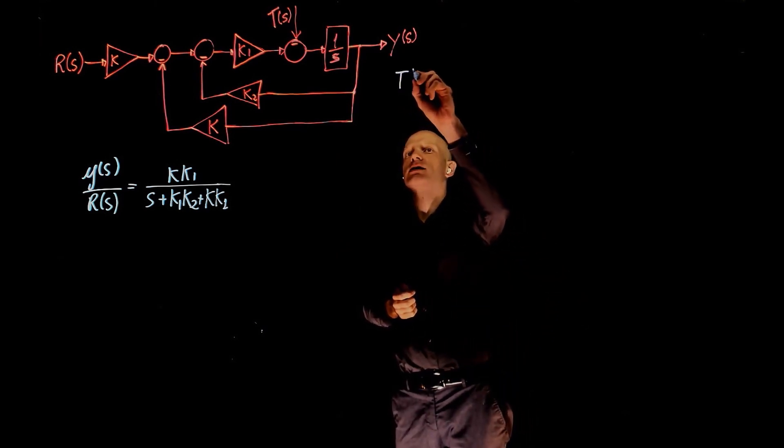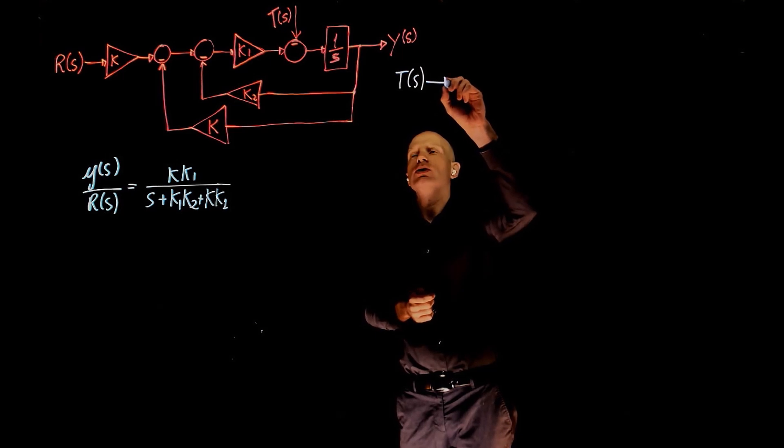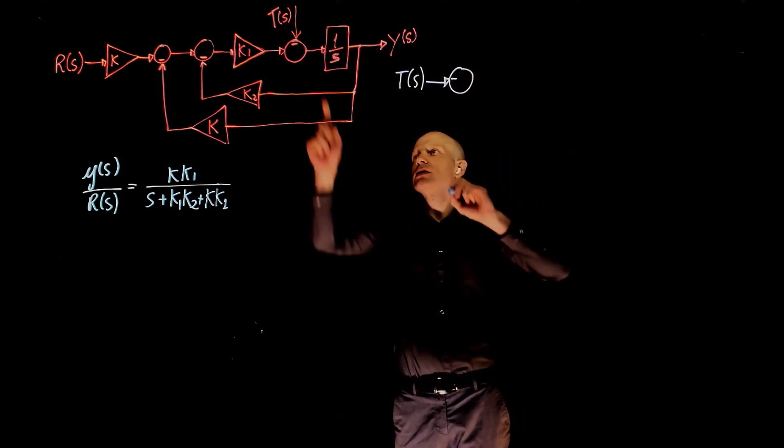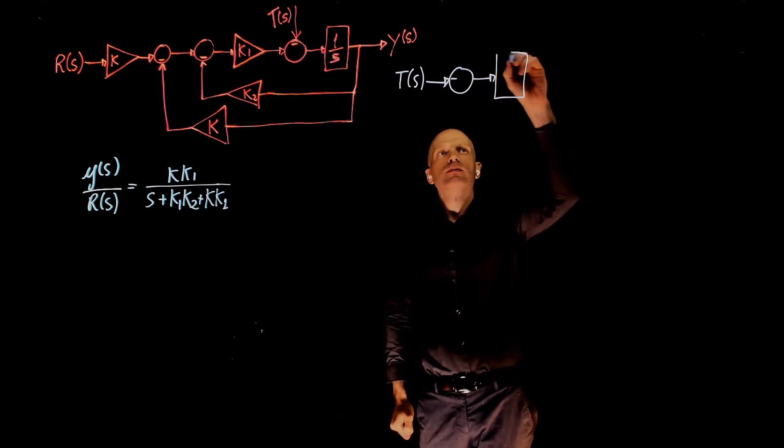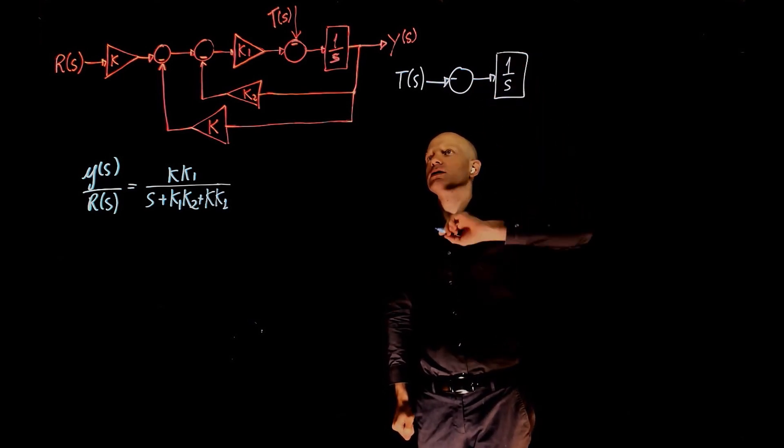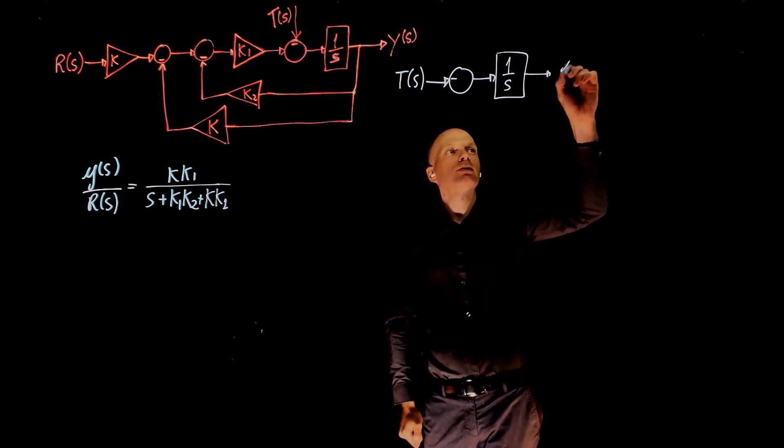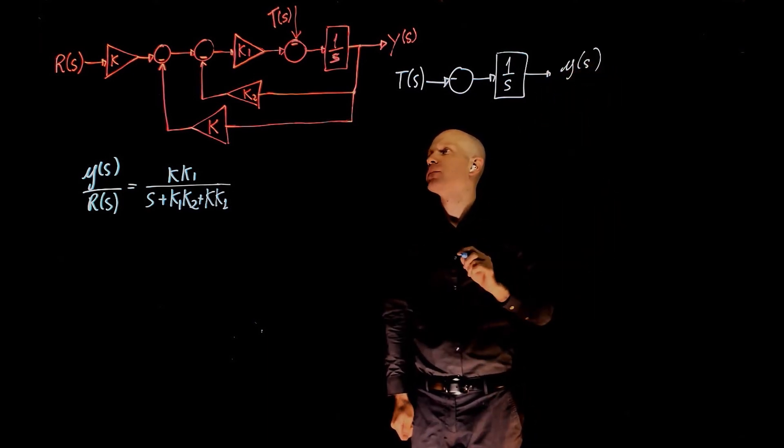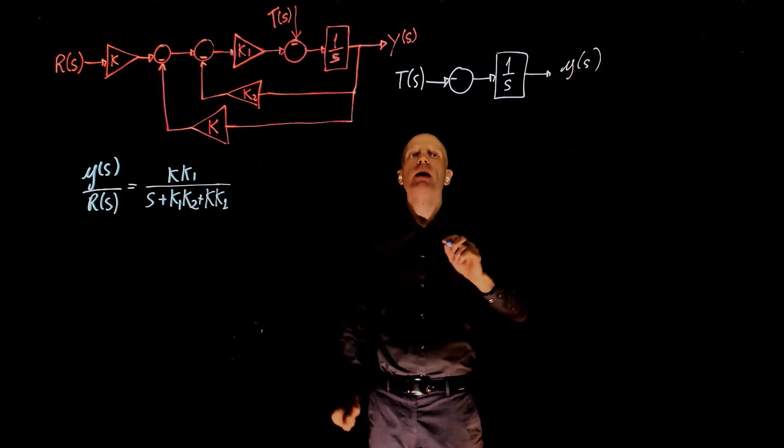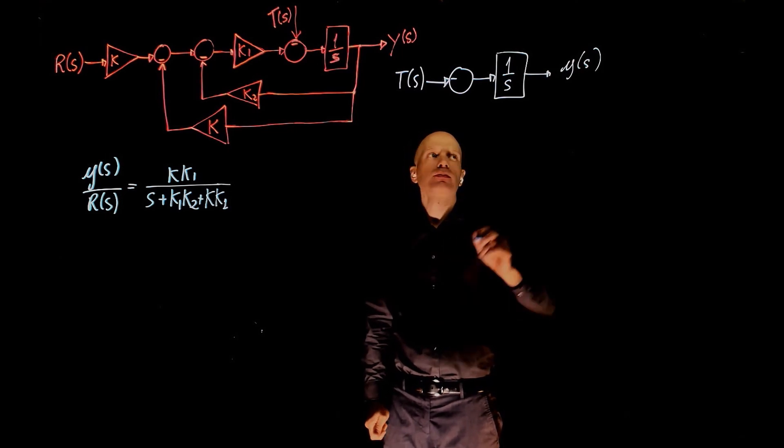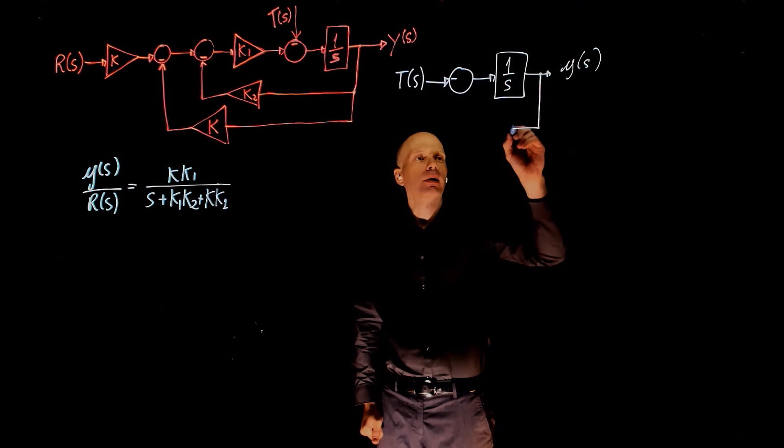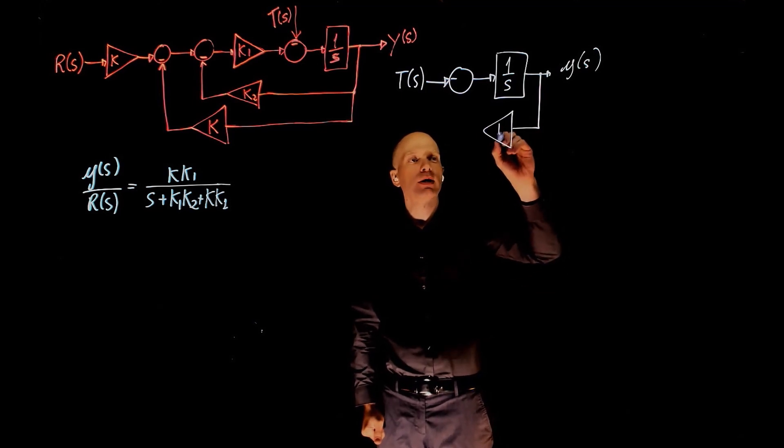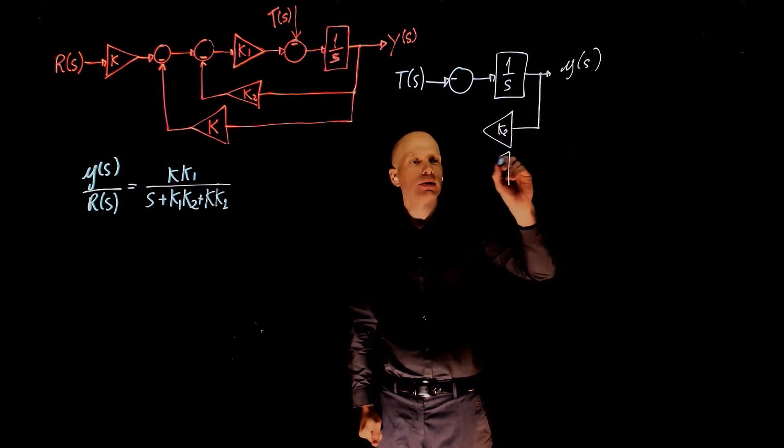We start with t of s, which is the input now. T of s has a negative sign. 1 over s is the plant, and the output doesn't change. And now we have to rearrange this feedback loop. They are both multiplied by a gain, both of these feedbacks. One is k2, the other one is k.